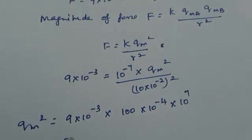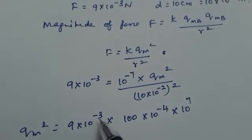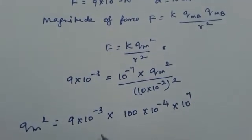So bringing to the numerator, this can be written as, here minus 7 and plus 7 will get cancelled.